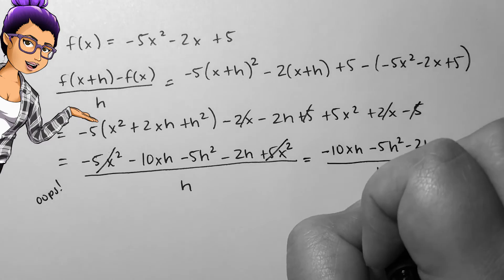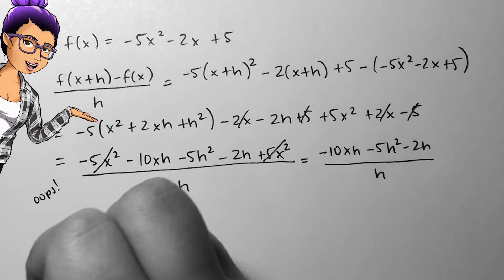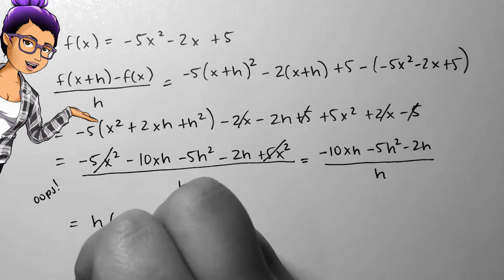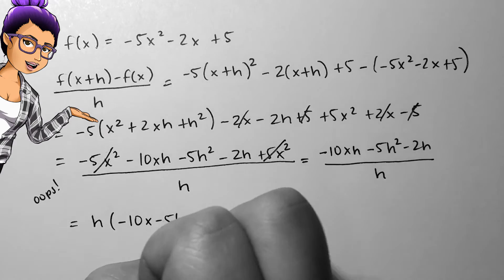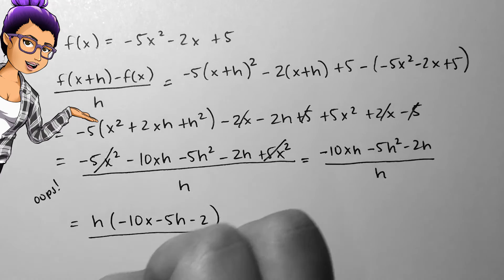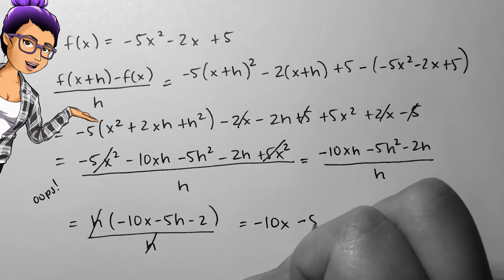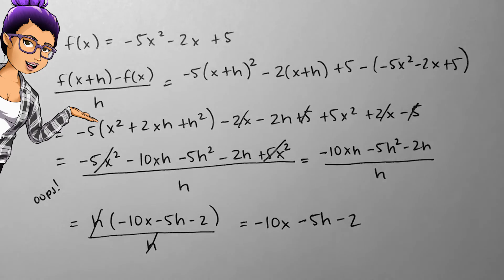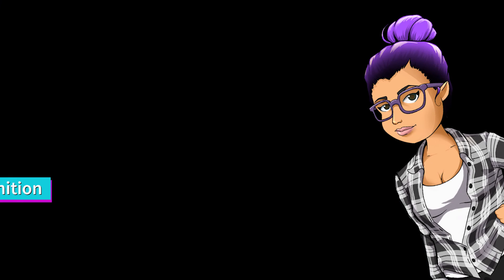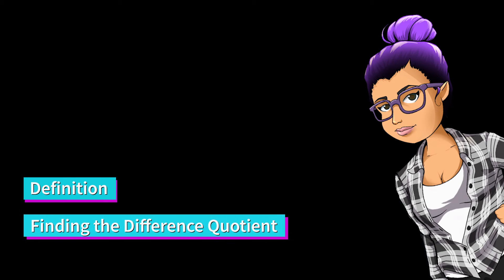I can factor an h out of each of these terms and cancel it out with the h in the denominator, leaving my final answer to be negative 10x minus 5h minus 2. This was an example of finding and simplifying the difference quotient of a function.